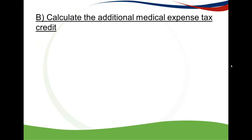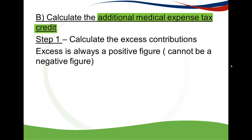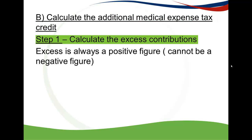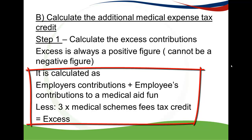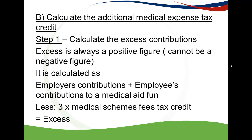Part B is the additional medical expense tax credit. First, you need to calculate the excess contributions — the excess is always a positive figure and can never be negative. It is calculated by taking the employee's contributions plus the employer's contributions to the medical aid fund, less three times your medical schemes fees tax credit. This is the first key difference from Part 1: where a person is younger than 65 with no disability, you deduct four times the medical schemes fees tax credit, but here you deduct three times.